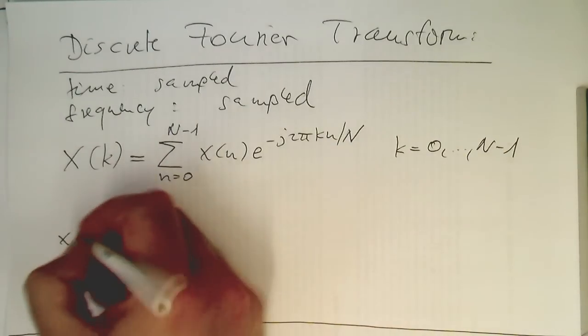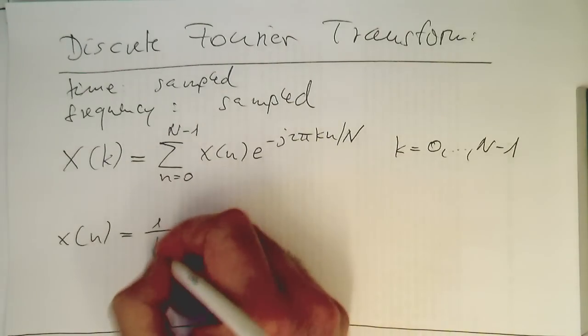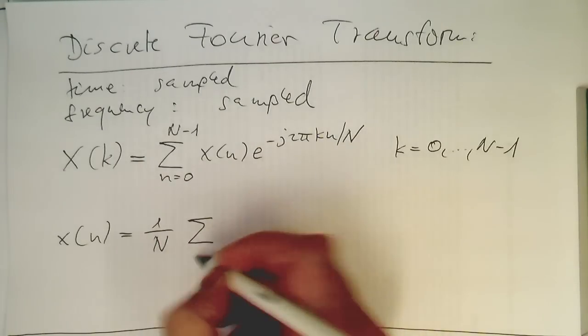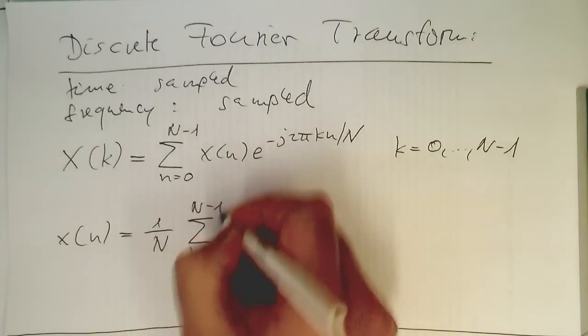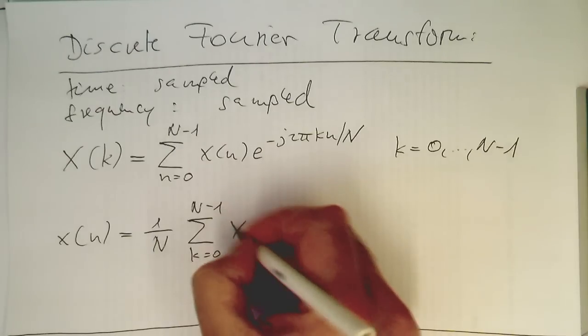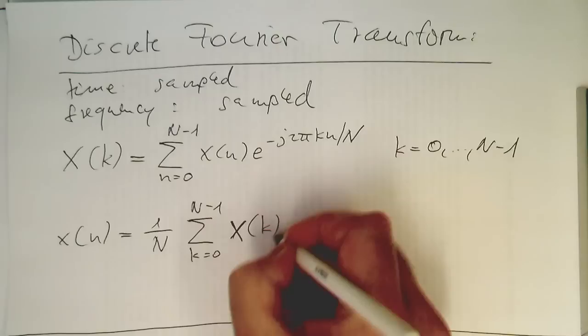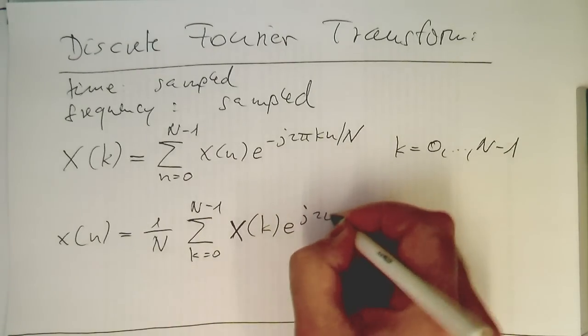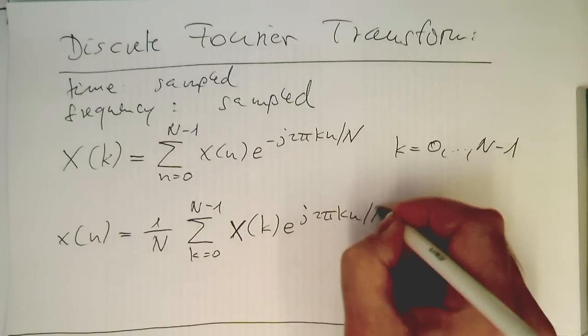And now the inverse Fourier transform here is 1 over N, so normalization from the 1 over 2π goes to 1 over N, and then this is running again from 0 to N minus 1. And now we've got our frequency variables here, e^(j2πkn/N).